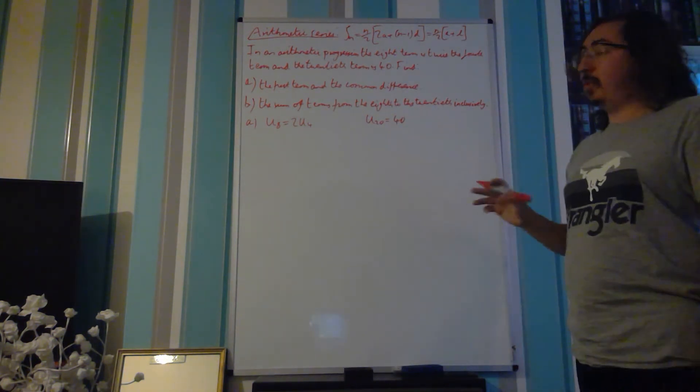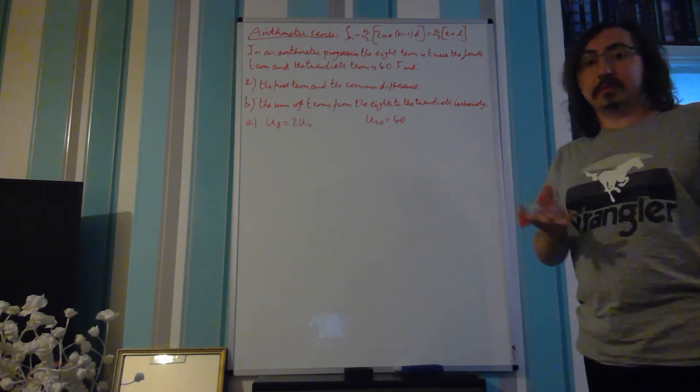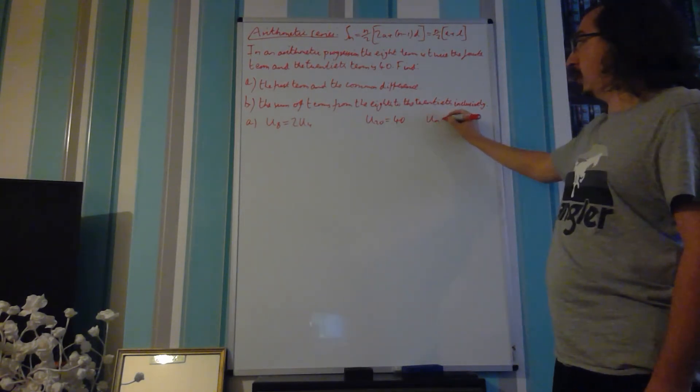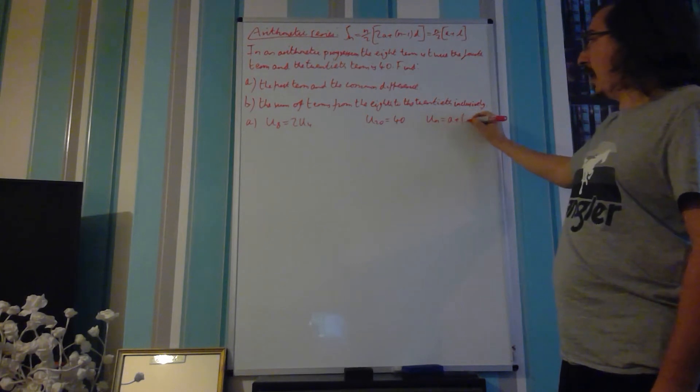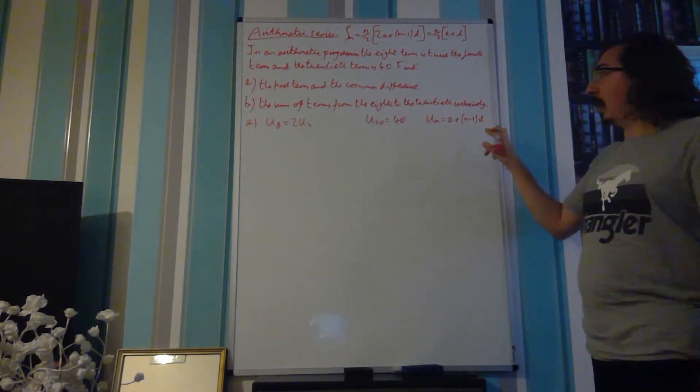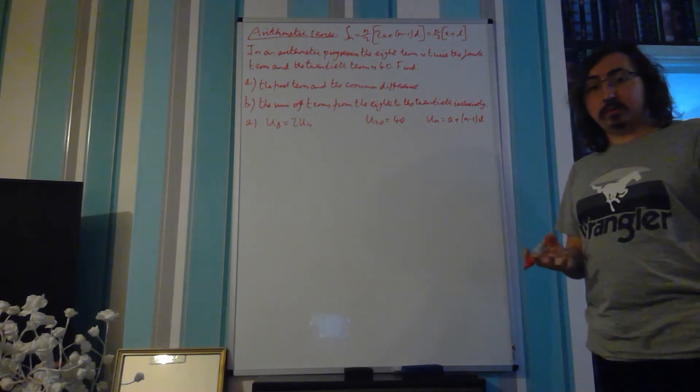For both of these we're dealing with the nth term expression, so we need to remind ourselves that Un is equal to A plus n minus 1 times D, and that is the formula we're going to use.